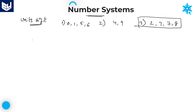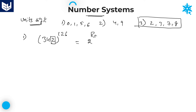How to solve the problems related to third category digits: if any number is ending with a third category digit, let me explain the first example. Take the number 342 to the power of 126. If you observe carefully, the number is ending with 2. If any number is ending with 2, which belongs to the third category digits, then the required units digit is 2 power remainder.